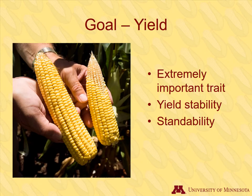Yield is almost always at the top of the list when it comes to breeding corn. Yield is a complex trait and there are many factors that come into play, such as yield stability, which refers to yielding well across different years and locations. Standability is the ability of a corn plant to remain standing upright even under adverse conditions. Standability affects yield because corn stalks that have fallen over are not able to be harvested, and that affects yield negatively no matter how much corn grain yield that plant may have.